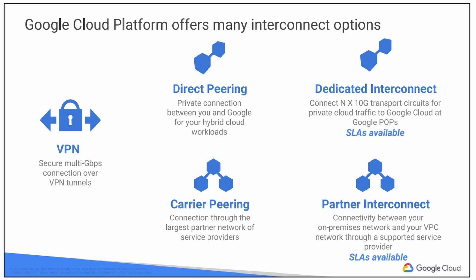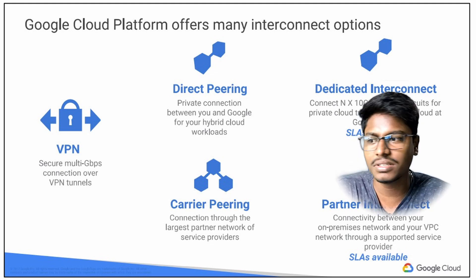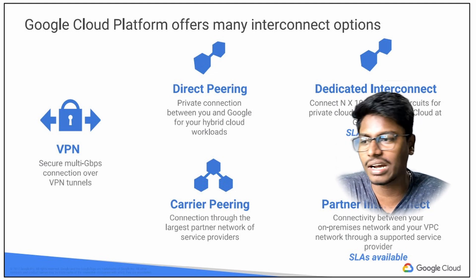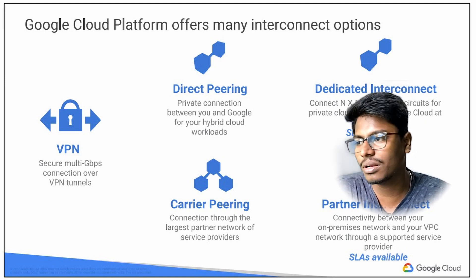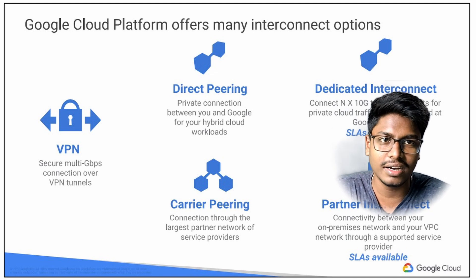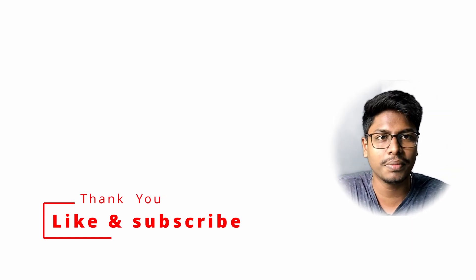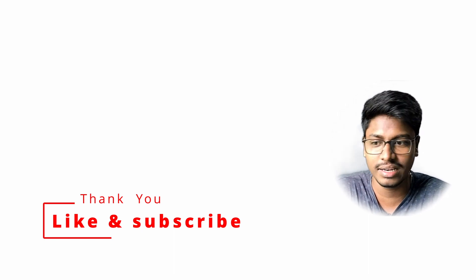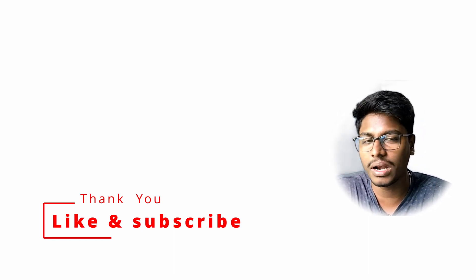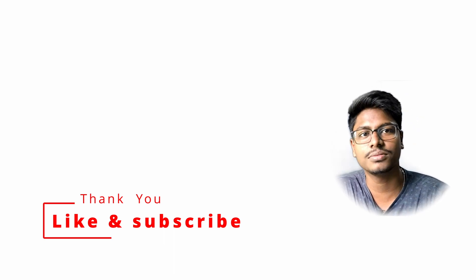There are also interconnect options: VPN, Direct Peering, Dedicated Interconnect, Partner Interconnect, and Carrier Peering. These allow you to connect VPC and VM machines from on-premises to the cloud. In the next video, we will see how to do the Compute Engine in the lab. See you guys in the next video. Bye!